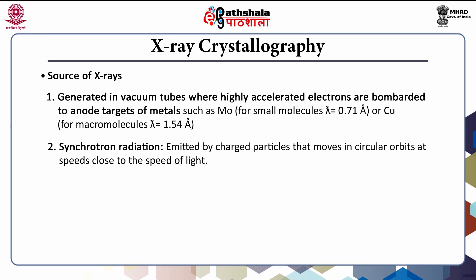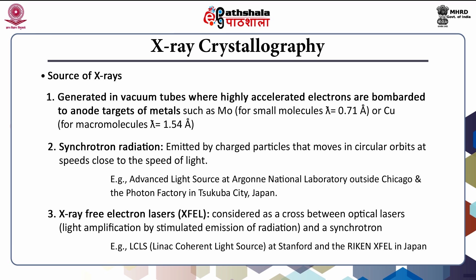Another method to produce X-rays is the acceleration of electrons in circular orbits at the speed of light. When electrons move in particular orbits at the speed of light, that results in the generation of X-ray beams — this particular way of generation is called synchrotron radiation. Synchrotron-generated X-ray beams are much more intense than those generated by electrons hitting the copper target. Examples include the Advanced Light Source at Argonne National Laboratory outside of Chicago, and the Photon Factory in Shibuoka City in Japan.